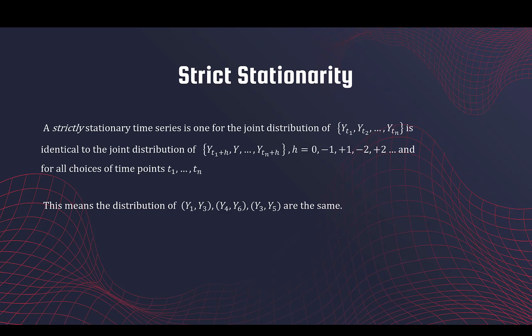So I have a set of n random variables; I take another set and move all the points either up or down by the same amount — the two sets will have the same joint distribution. This holds true for any n, so whether I have a set of one variable, two variables, or a hundred variables, this property should hold for any collection of time points.